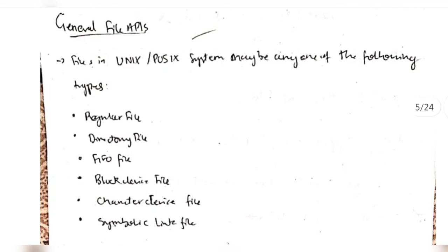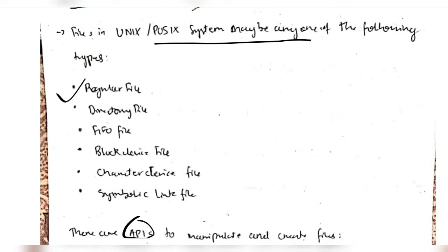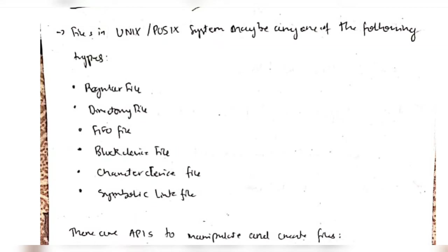There are a few types of APIs which we will be discussing later. First, the types of files which can be used in Unix and the POSIX system are: regular file, directory file, FIFO file, block device, character device, and symbolic link.